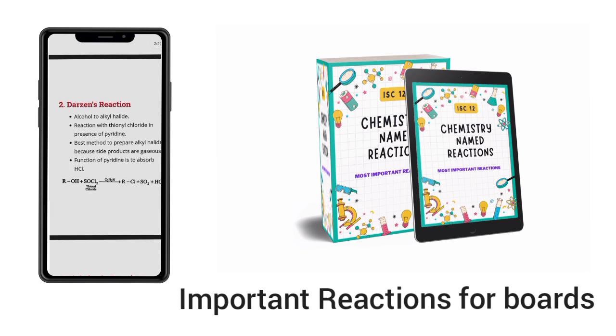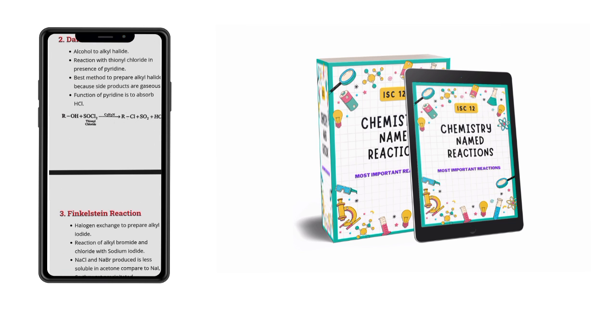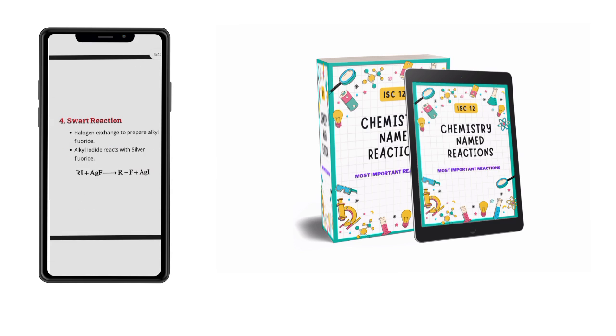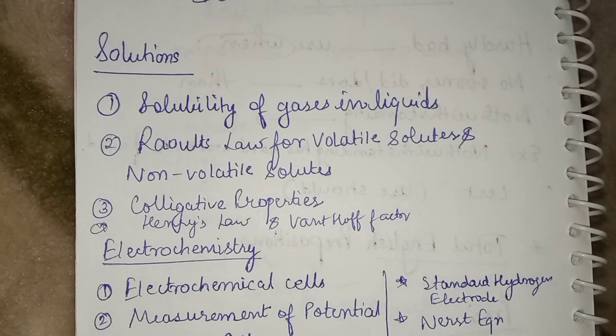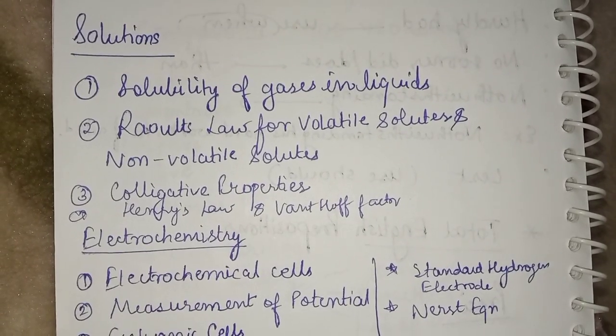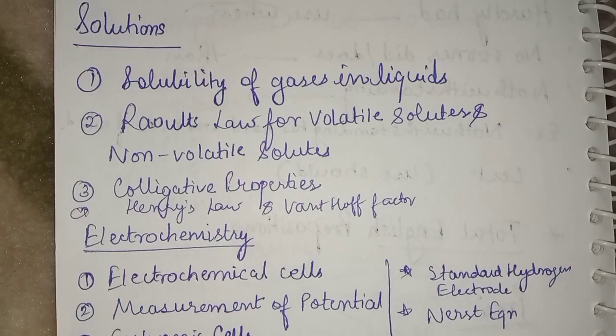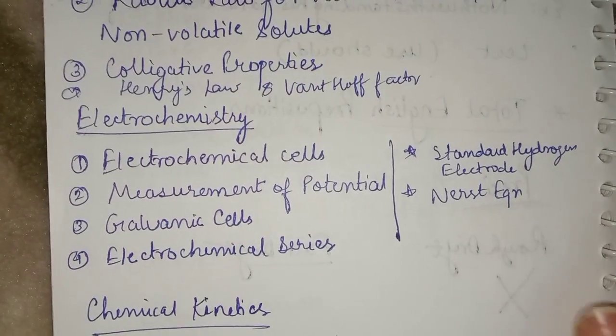If you go by the previous year, you can see a lot of reactions has been asked from there. So you can purchase this ebook from the link in the description box. One question is asked every year, so please practice previous year questions. You will come to know which type of numericals are asked.